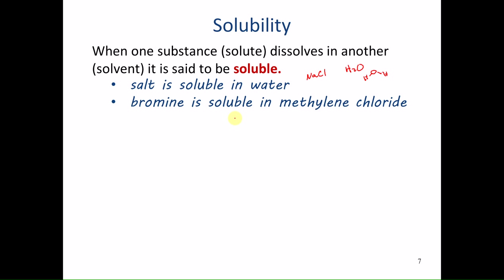Bromine is soluble in methylene chloride. Bromine is a diatomic liquid — because both sides of the bond are the same element, there's no polar bond, making it a non-polar molecule. Methylene chloride, also called dichloromethane, has only a small difference in electronegativity between chlorine and carbon, so it has only a very small dipole moment — it's only slightly polar. Because of this, bromine will dissolve in the methylene chloride.